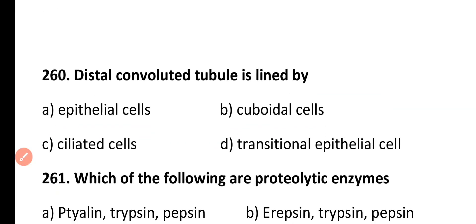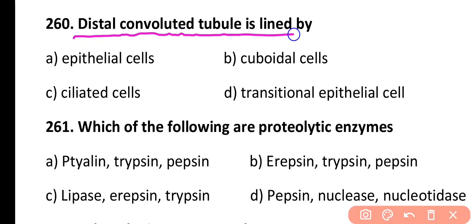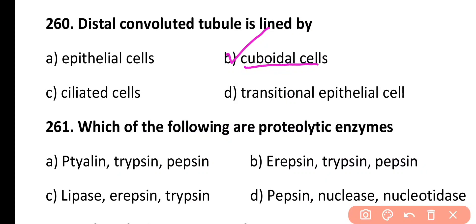Question 260. Distal convoluted tubule is lined by: epithelial cells, cuboidal cells, ciliated cells, or transitional epithelial cells. Correct answer is Option B. Cuboidal epithelial cells are present in the distal convoluted tubule.